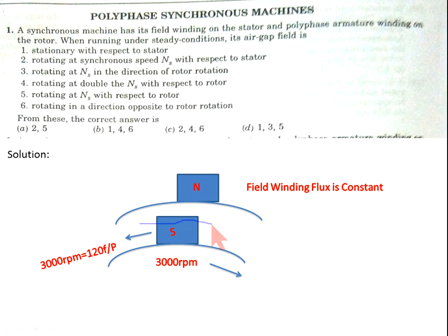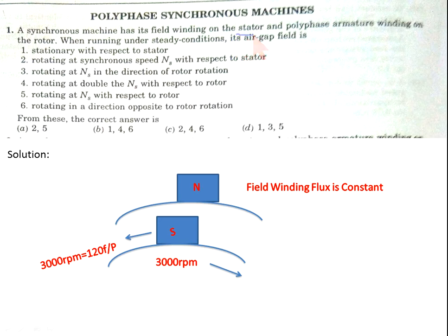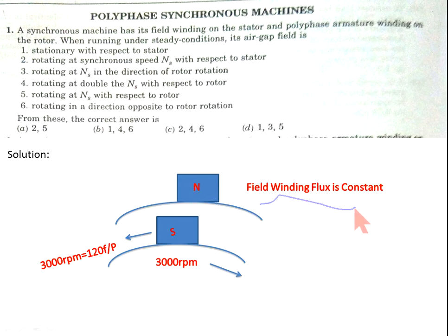The rotor is running at 3,000 rpm in one direction and the rotating magnetic field is running at 3,000 rpm in the opposite direction. This is because of interchange in the stator and polyphase armature winding of the synchronous machine. The field winding is placed on the stator, so the field winding is constant because of the DC source applied on it.